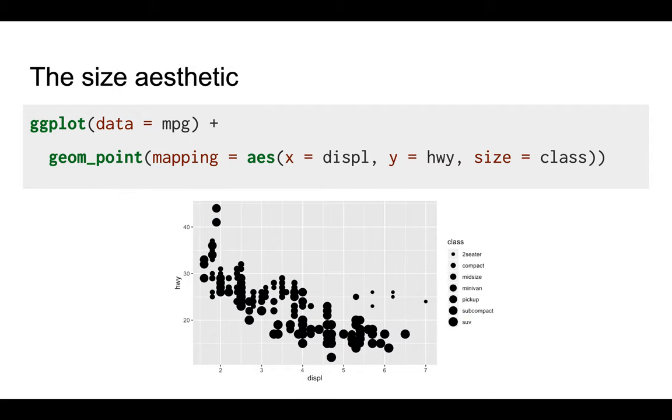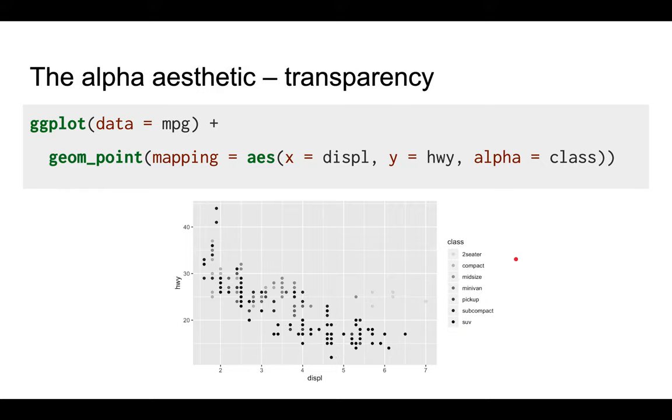Next, you can change the size of points based on their data values, and you get basically small to large points. You can also change the alpha, which basically means the transparency of the points, so you get some lighter points and some darker points.